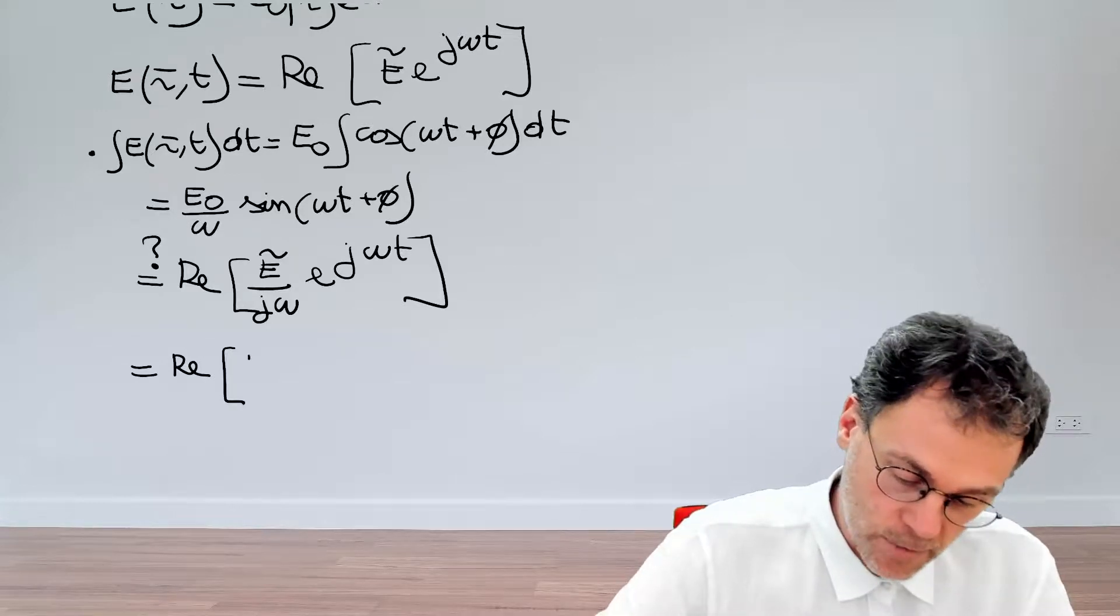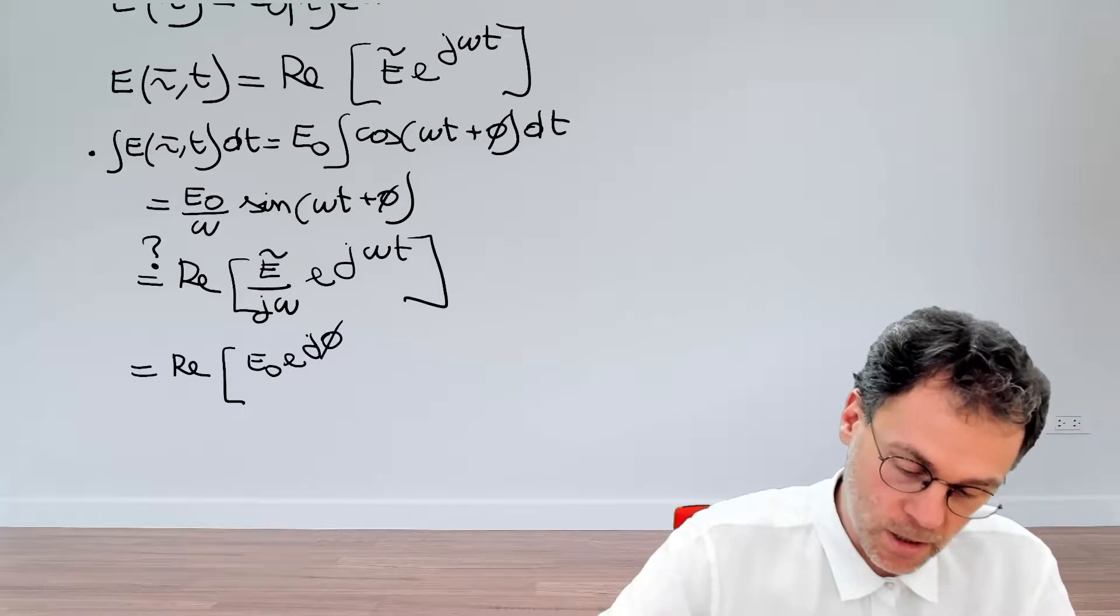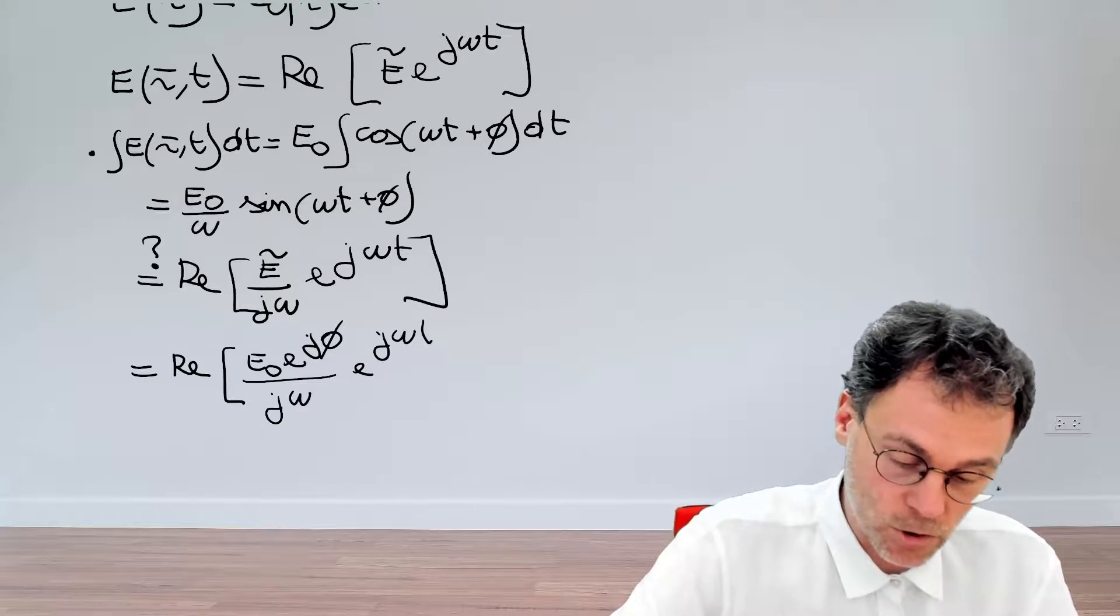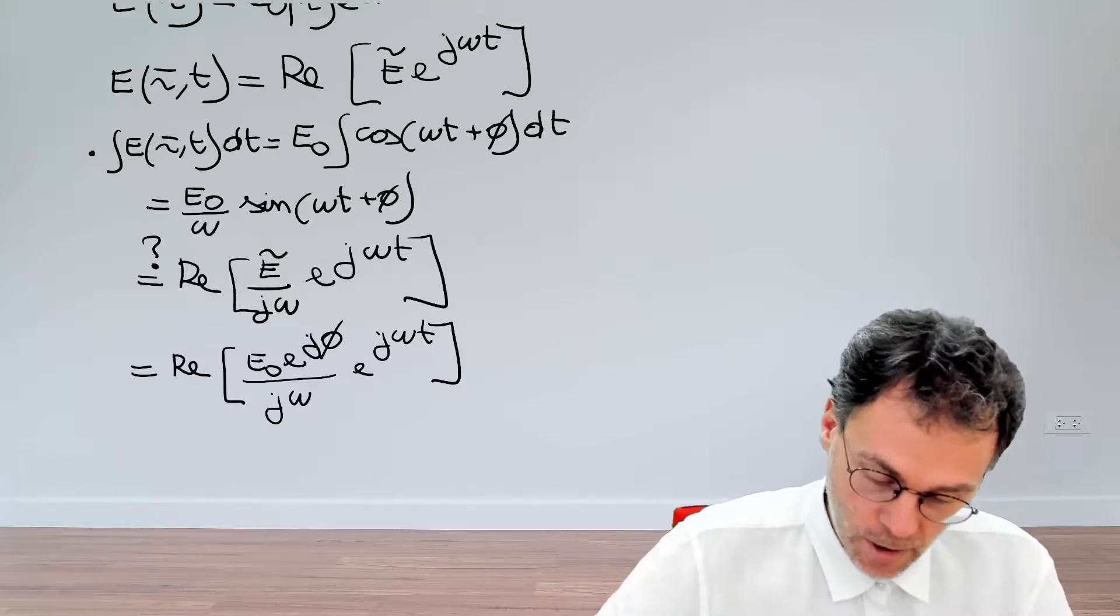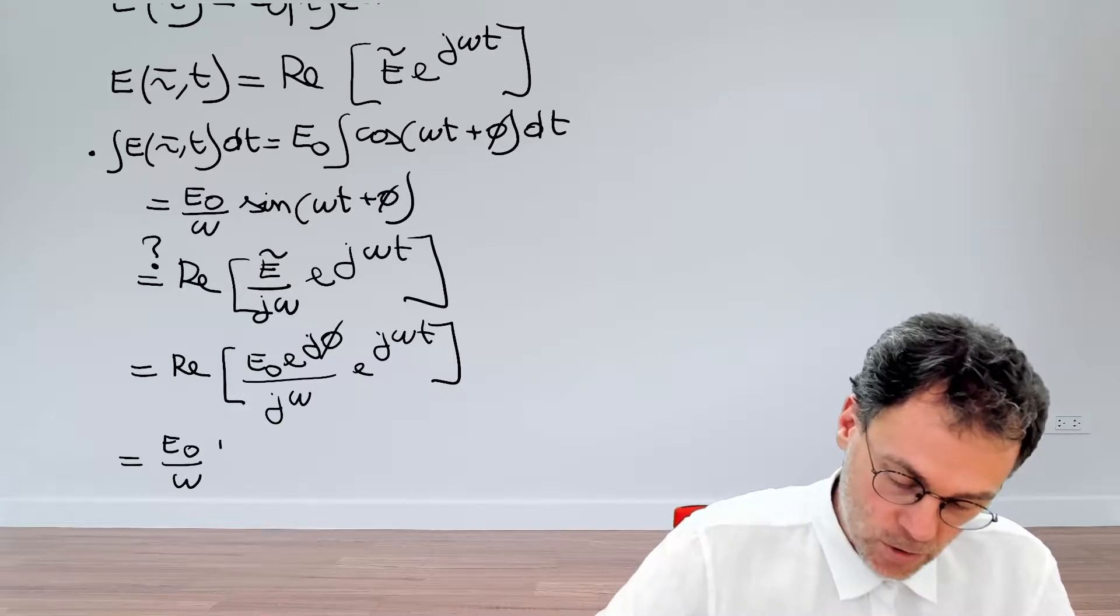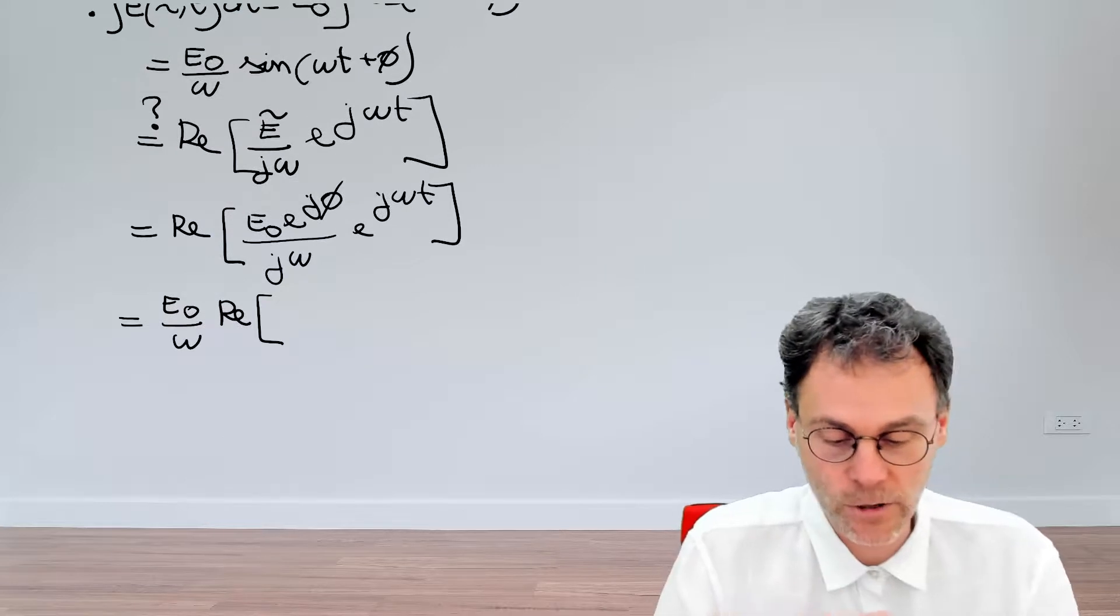So, this Ẽ basically consists of E₀ exponential j φ. So, filling that in, we get the following: exponential j ω t. Now, E₀ and ω are real valued. So, we can just bring that out of this real valued operation. And